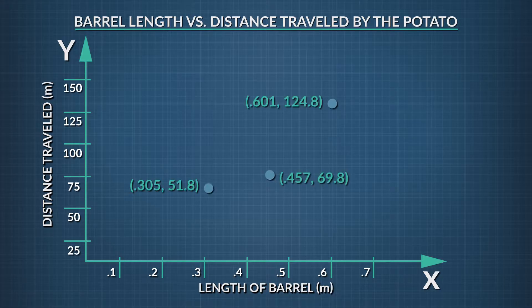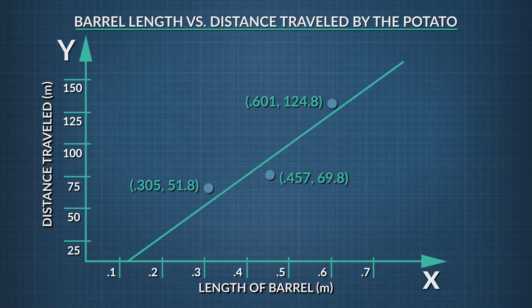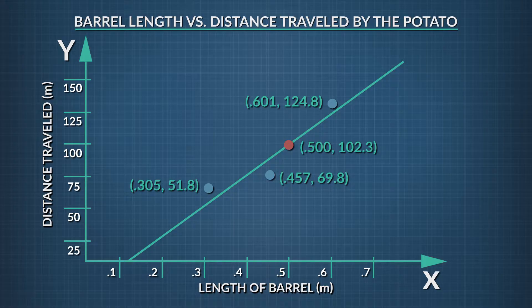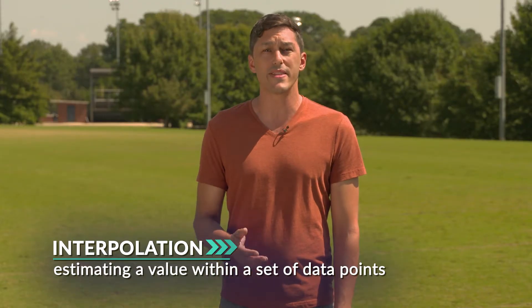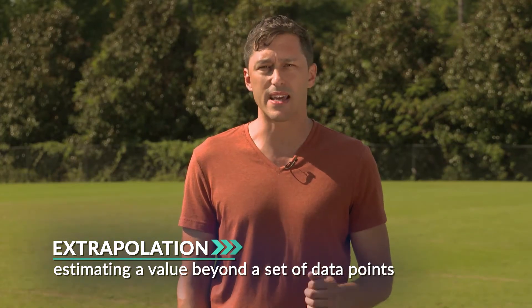Now plot your data points on the graph. Draw what we call a best-fit line — the line that runs through the average of your points. The graph supports our hypothesis that the longer the barrel, the farther the potato travels. We can pick a point within our graph that wasn't one of our data points: when the barrel is 0.50 meters long, the potato should go 102.3 meters. This method of prediction is called interpolation — estimating a value within a set of data points. We can also trace our best-fit line out beyond our data points and predict how far the potato will go. This is called extrapolation — estimating a value beyond a set of data points.